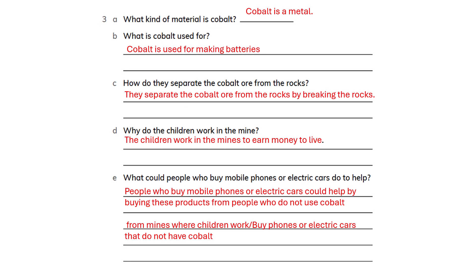Cobalt is a metal, as stated in the passage. Cobalt is used for making batteries. They separate cobalt ore from the rocks by breaking the rocks. Children work in the mines to earn money to live because they are poor. People who buy mobile phones or electric cars could help by choosing products from manufacturers who do not use cobalt from mines where children work, or by buying phones or electric cars that do not contain cobalt.